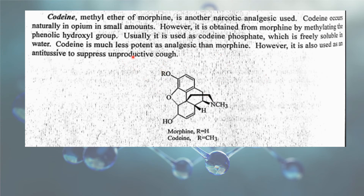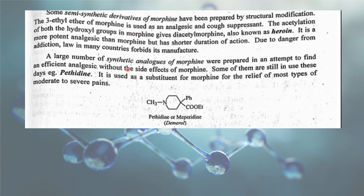Codeine has less side effects than morphine and is used as a substitute for morphine for relief of most types of moderate to severe pain. Another morphine-derived drug is heroin. Heroin is nothing but acetylated morphine.